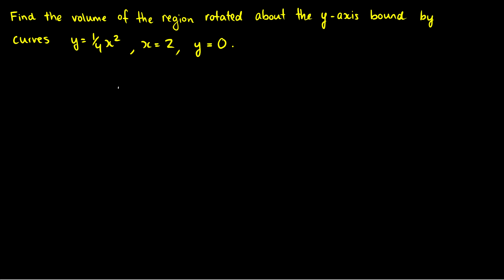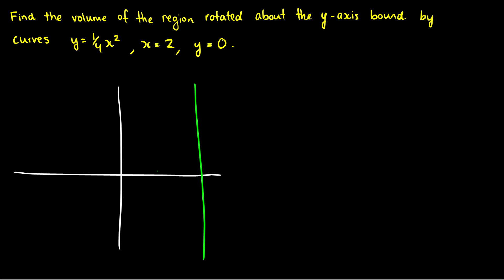The first thing we should always do is draw this. The line x = 2 is our first bound, y = 0 is the x-axis bound, and then y = (1/4)x². At x = 0 we're at the origin, at x = 1 we're at about a quarter, and at x = 2 we get to one. So our parabolic curve goes from the origin up to the point (2, 1), and x = 2 is a vertical line.